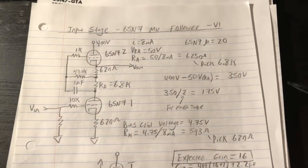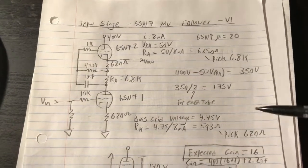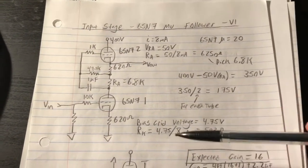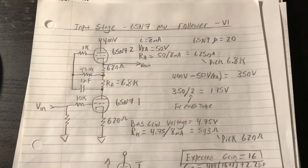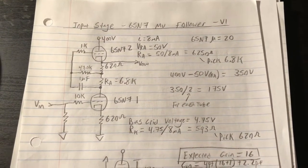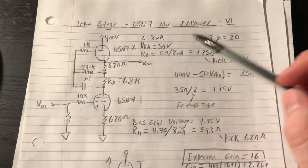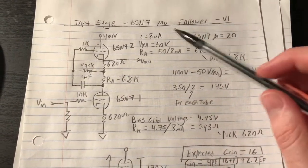Hi everyone, welcome back to project 2845. I've had a few days since introducing the project to think about and play with some preamp configurations, and I think for the first stage or input stage of the amplifier, I'm going to implement this 6SN7 mu follower.